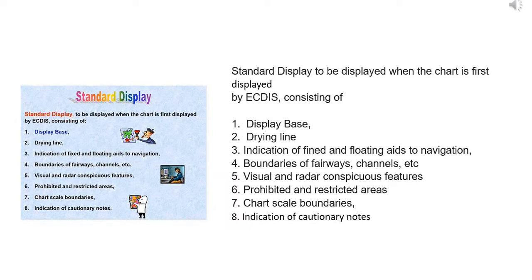Standard Display is to be displayed when the chart is first displayed by ECDIS, consisting of: 1. Display Base; 2. Drying Line; 3. Indication of fixed and floating aids to navigation; 4. Boundaries of fairways, channels, etc.; 5. Visual and radar conspicuous features; 6. Prohibited and restricted areas; 7. Chart scale boundaries; 8. Indication of cautionary notes.